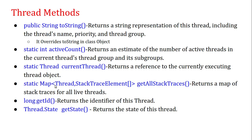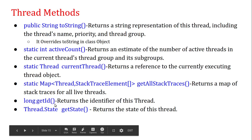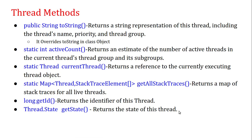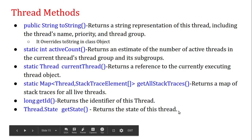static Map<Thread, StackTraceElement[]> getAllStackTraces() — returns a map of stack traces for all live threads. long getId() — returns the identifier of this thread. Thread.State getState() — returns the state of this thread, whether it is new, terminated, time-waiting, blocked, etc.